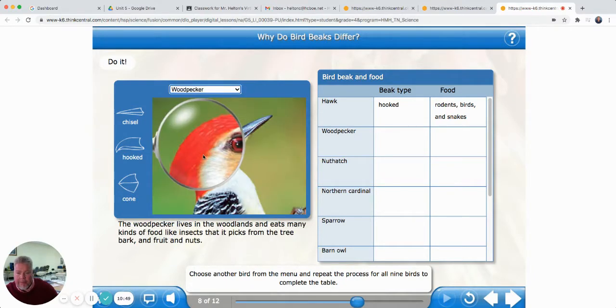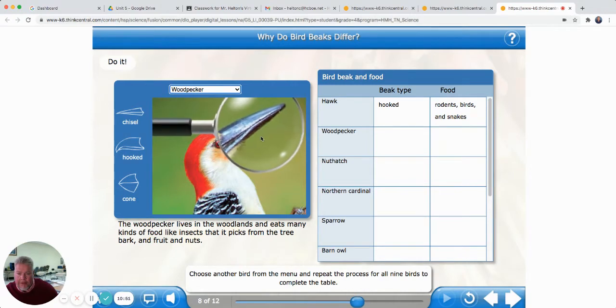Choose another bird from the menu and repeat the process for all nine birds to complete the table. We'll look at the woodpecker now. It's more like a chisel bill. It's kind of long and narrow. So it's got a chisel bill. Let's see what it eats. He eats many kinds of food like insects, insects that it picks from the tree bark and fruits and nuts.